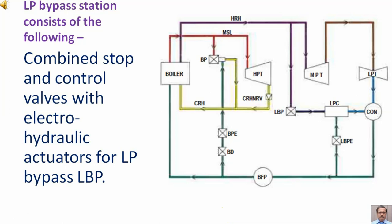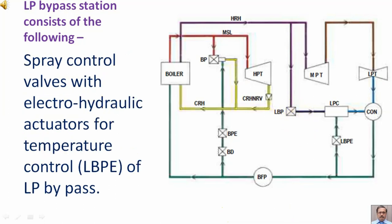LP bypass station consists of the following: combined stop and control valve with electro hydraulic actuators for LP bypass, that is LBP. Spray control valve with electro hydraulic actuators for temperature control, LBPE of LP bypass.